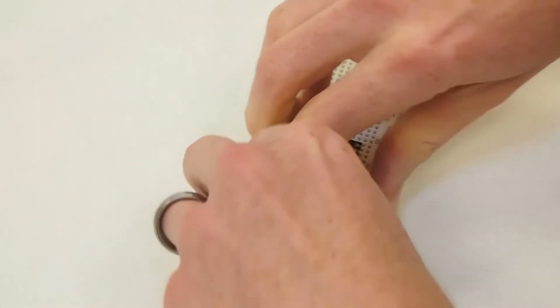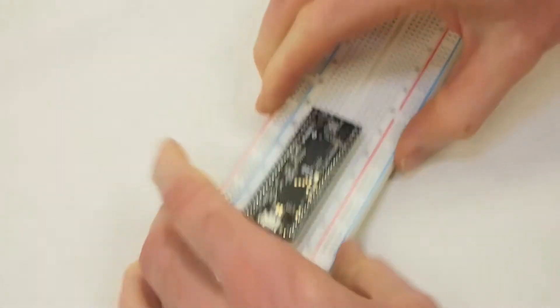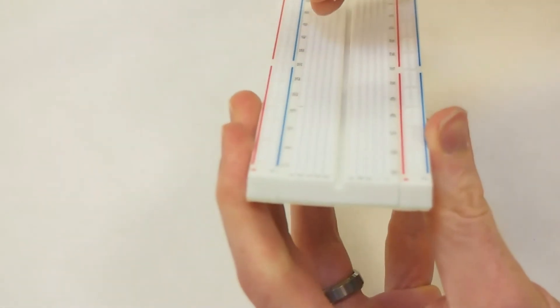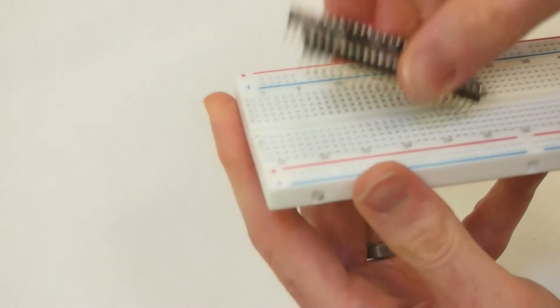If you continue doing this, eventually you'll be able to get it all the way off and pop it out like that. Again, it's very important not to bend it up like this, because if you leave the pins in the breadboard, you'll end up bending them.